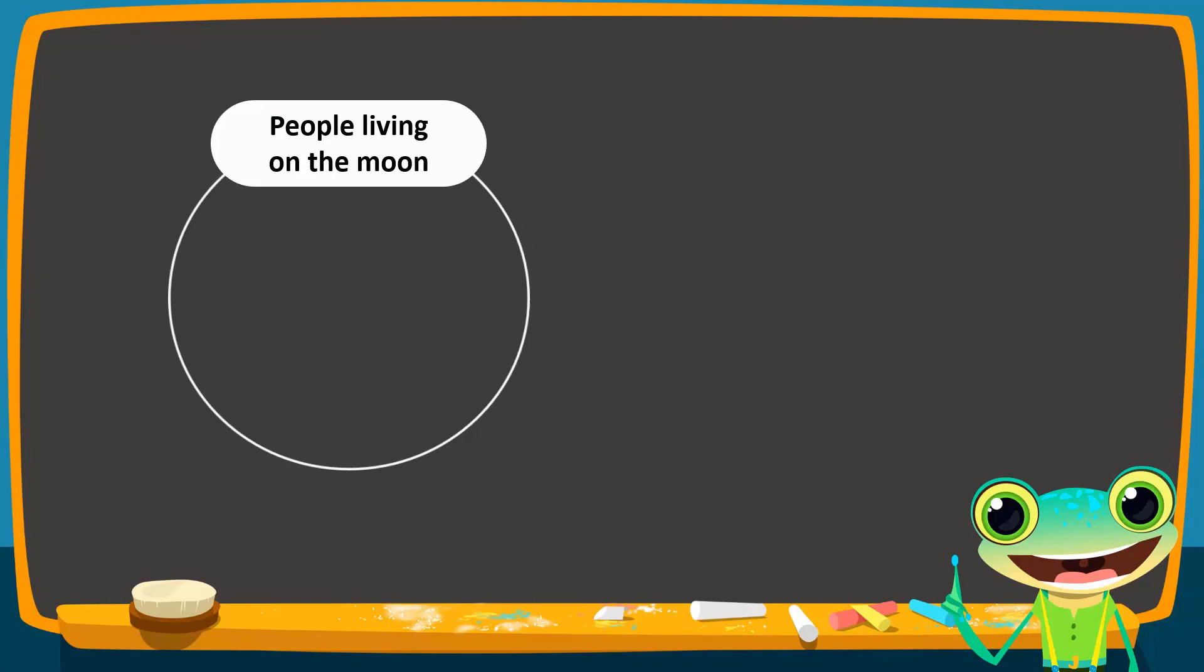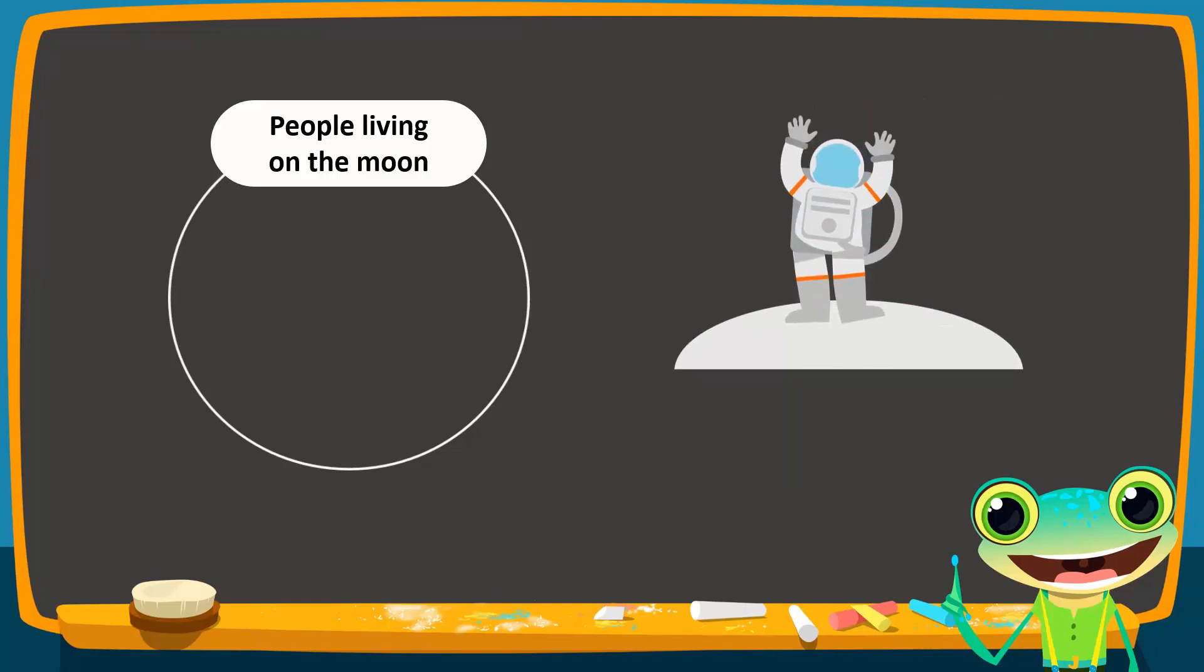Next, we want to find the set of people living on the moon. We know that mankind has set foot on the moon many years ago. But no one is living there now. Therefore, this is an empty set. Again, we express it as empty braces or phi.